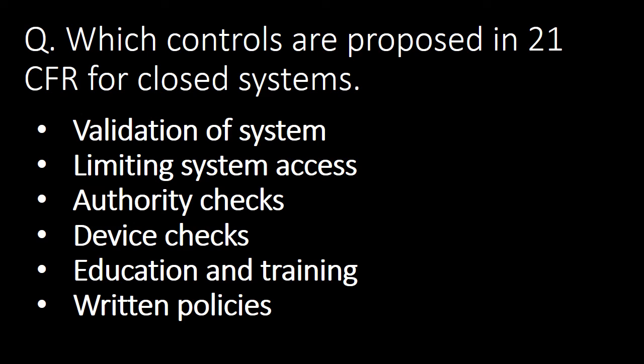Next important question: which controls are proposed in 21 CFR for a closed system? The controls are: validation of the system, limiting system access, authority checks, device checks, education and training, and routine policies.